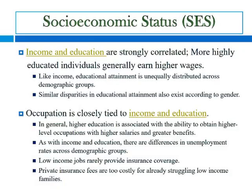Income and education are strongly correlated. More highly educated individuals generally earn higher wages. Like income, educational attainment is unequally distributed across demographic groups. Similar disparities in educational attainment also exist according to gender. Occupation is closely tied to income and education — higher education is associated with the ability to obtain higher level occupations and resulting higher salaries and greater benefits. There are also differences in unemployment rates across demographic groups, and we know that low income jobs rarely provide the much needed health insurance.